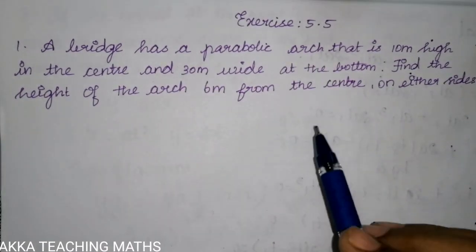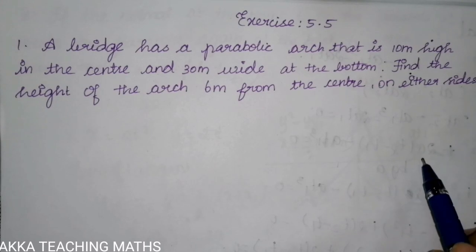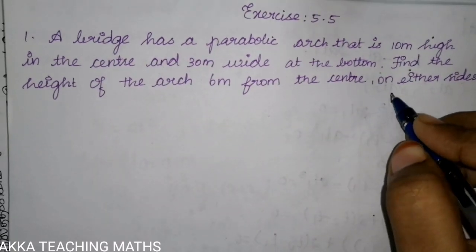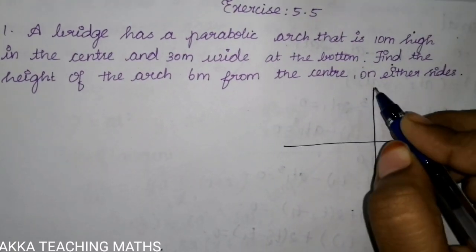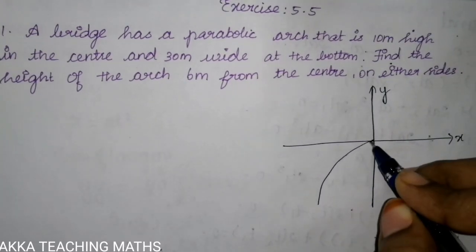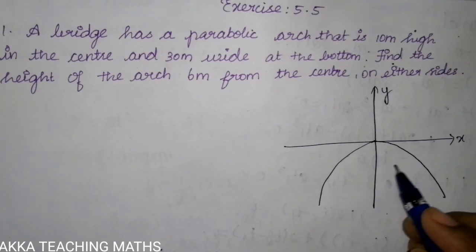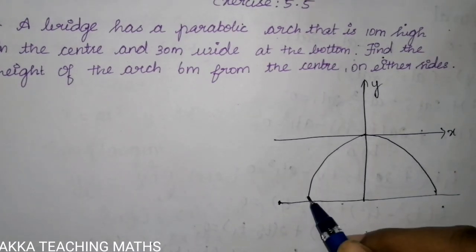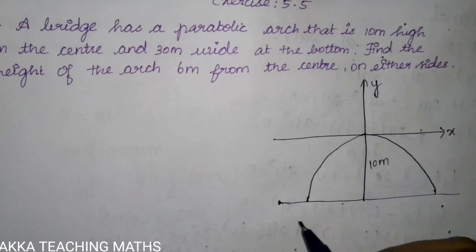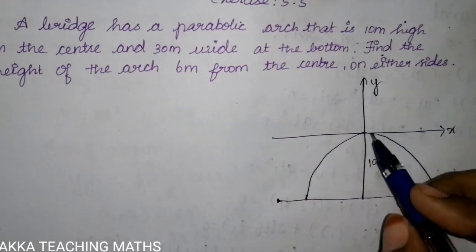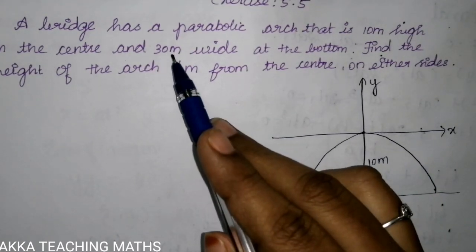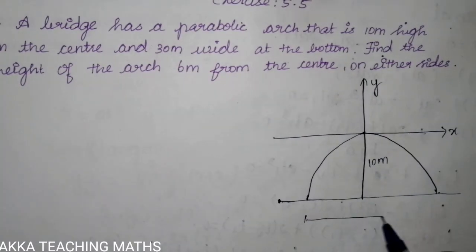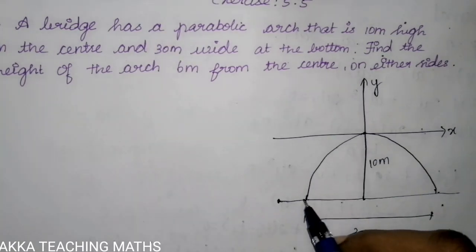Bridge has a parabolic arch. So the bridge has a parabolic arch. The center height is 10 meters. That is 30 meter wide at the bottom. So the full width is 30 meter, and the center length from center to one side is 15 meter.